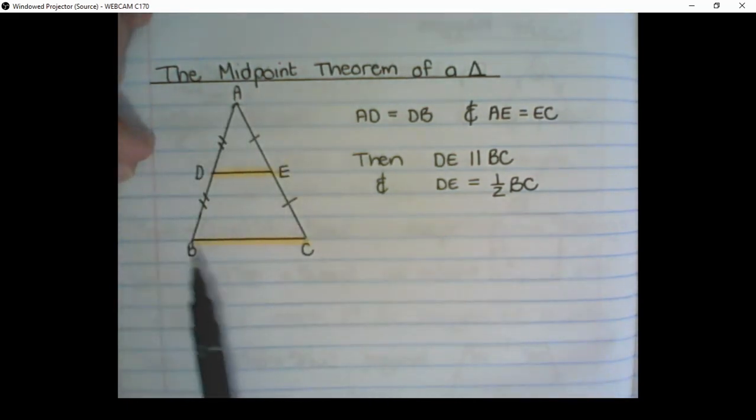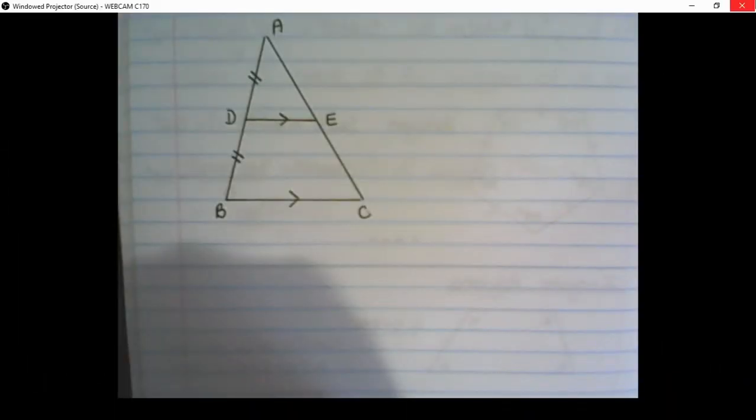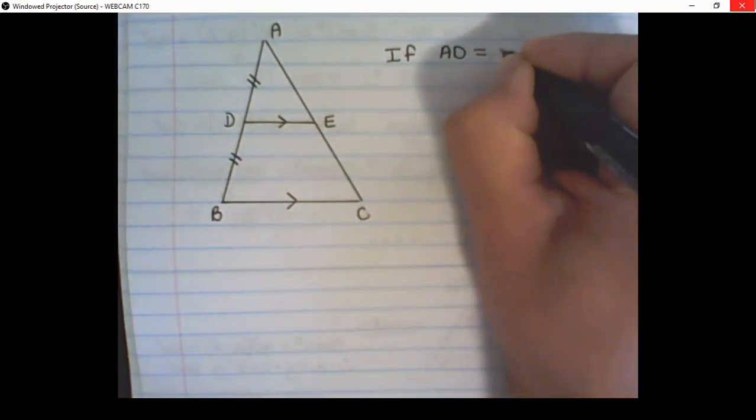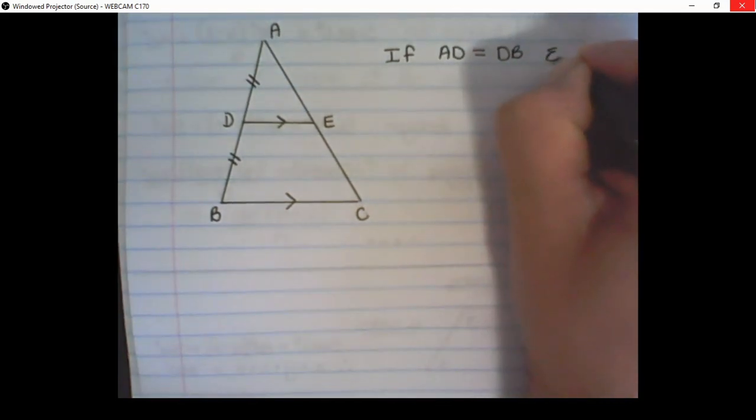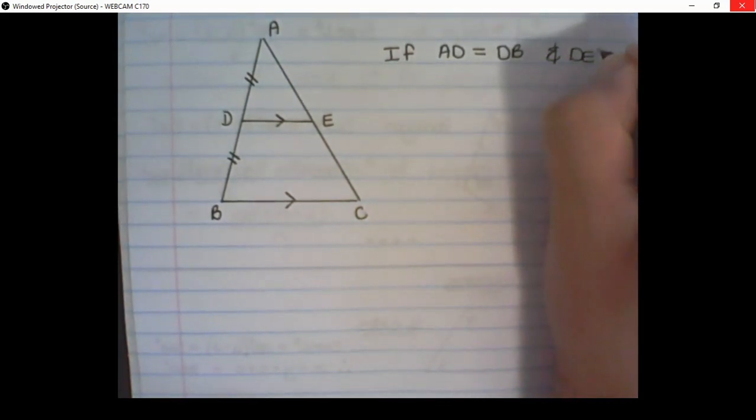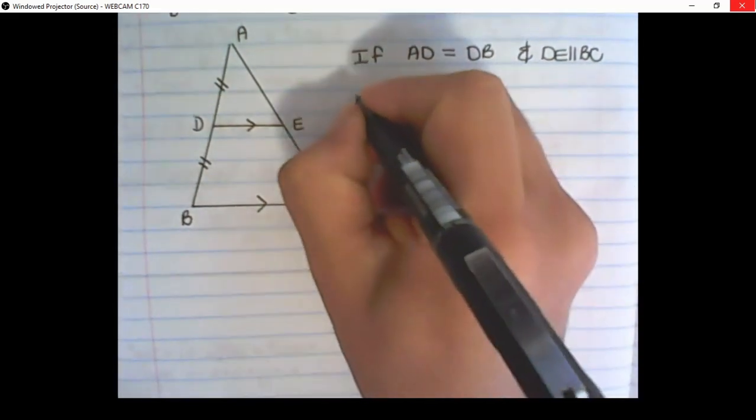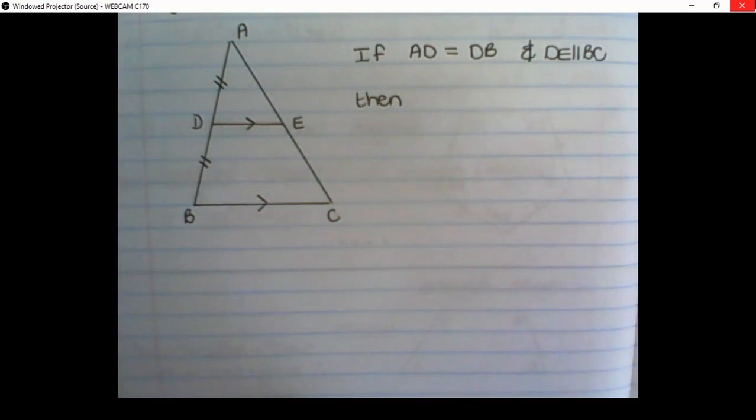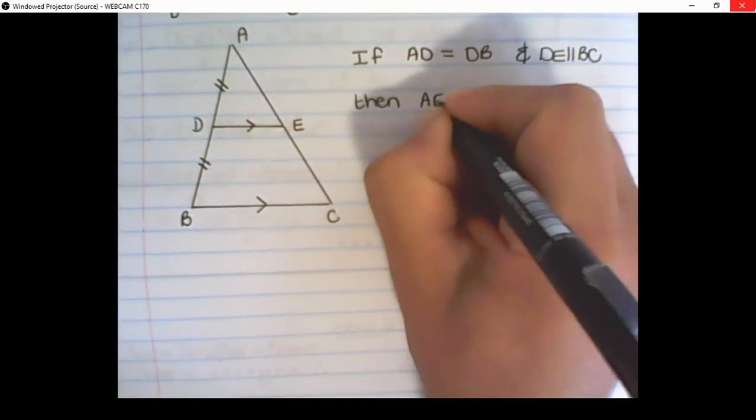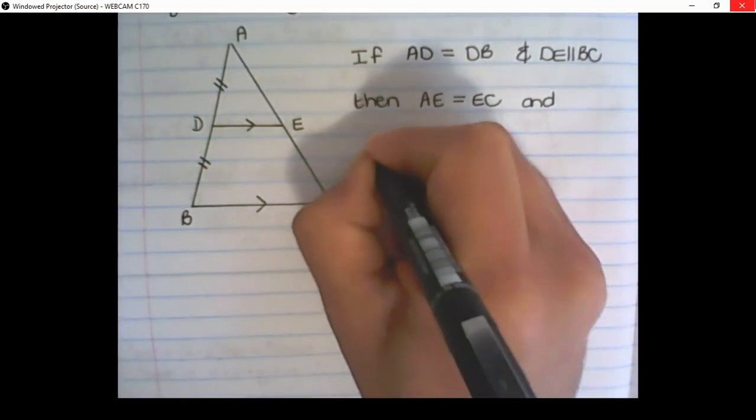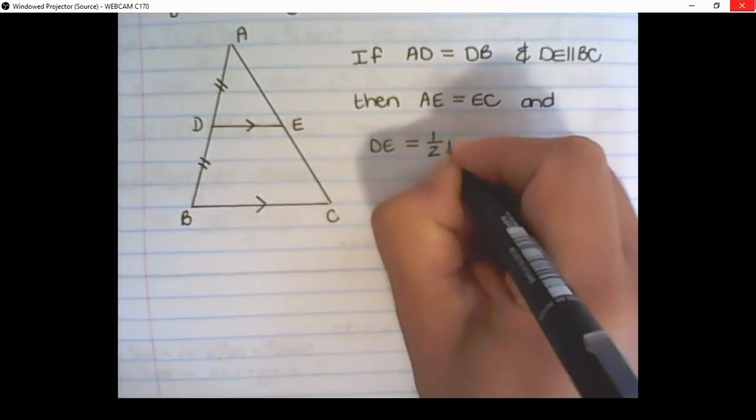You are going to learn where this comes from a bit more in grade 12. You can also apply the information you just learned in reverse. So if I have the line AD equals to the line DB, and I have DE parallel to BC, then we have AE equals to EC, and again we have DE is equal to half of the line BC.